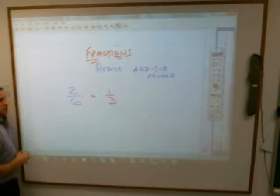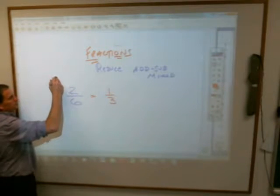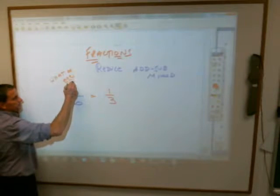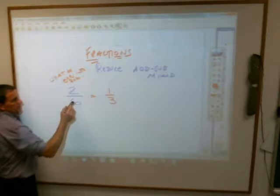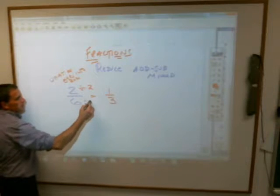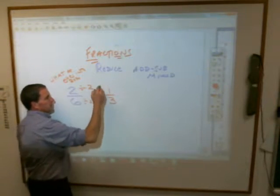So how do we reduce without using those fraction manipulative things? What do you have to do, Evelyn? Divide them both by two. Right. Look to see what number goes into both the top and the bottom. And if you look at these, two goes into both, so you divide them both by two, and you get one-third.